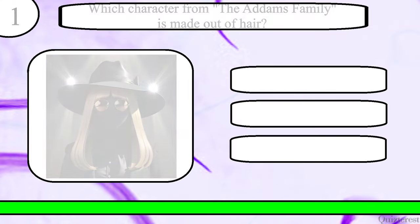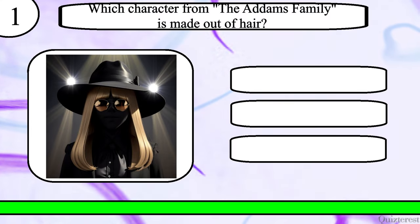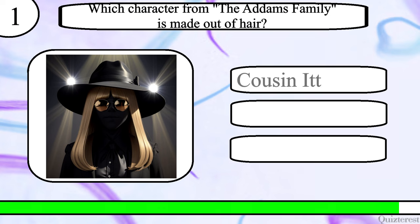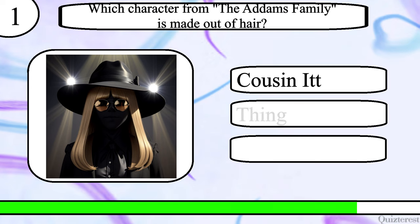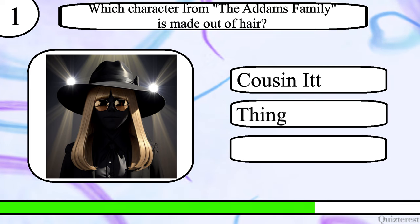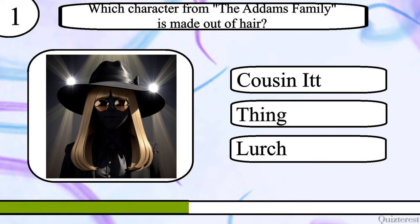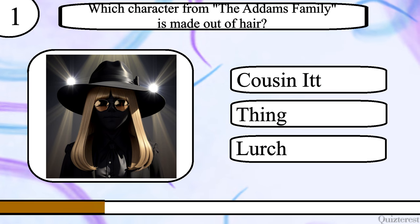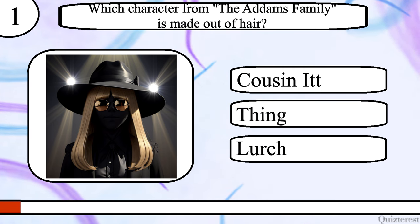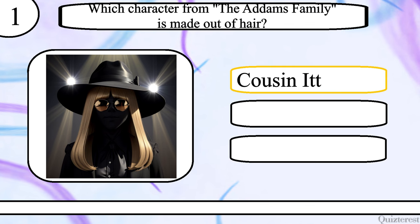Question 1. Which character from The Addams Family is made out of hair? Cousin It, Thing or Lurch? The correct answer is Cousin It.